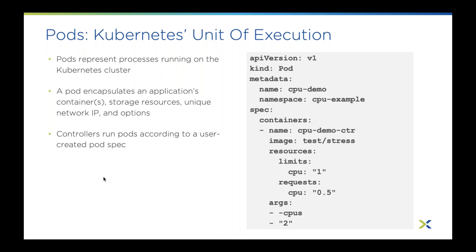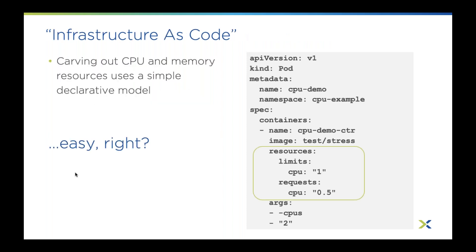Looking at the resources section of the pod spec, you'll see a declaration for CPU. There's a limit — the nice-to-have — and a request — what you really need. There's a declarative model for running a pod and getting resources like CPU and memory. That should make it pretty easy — you would think. But what about persistent storage? What about networking, load balancing, security, monitoring, logging, and application management availability?